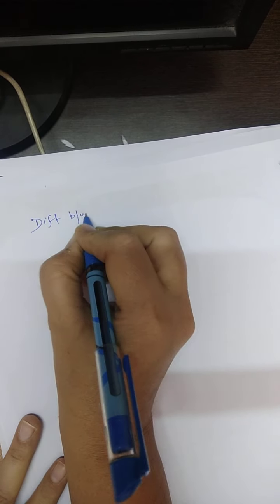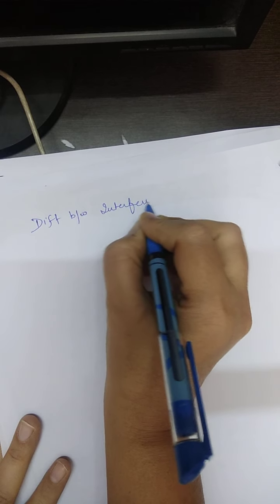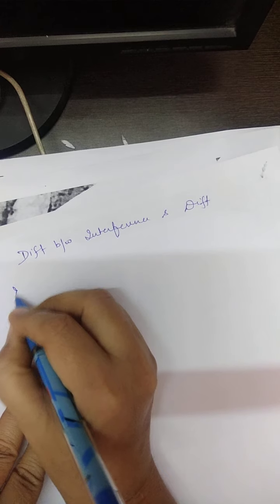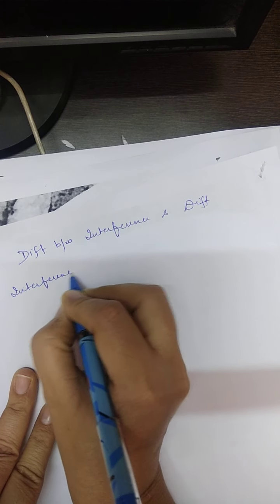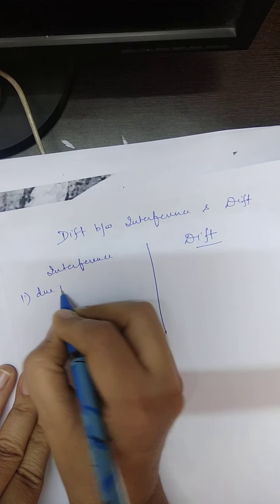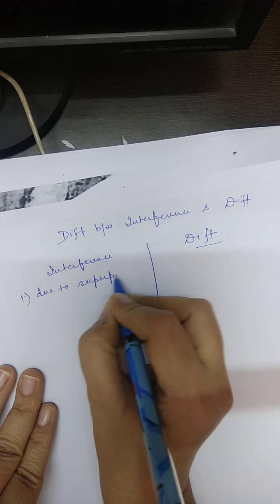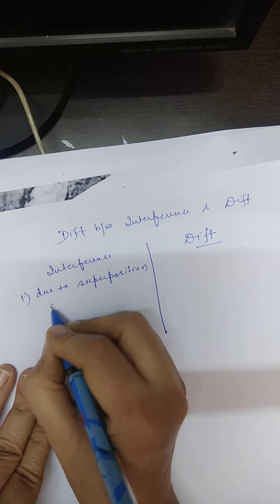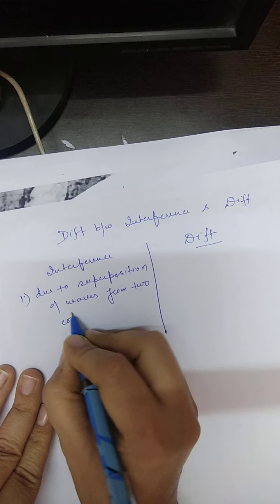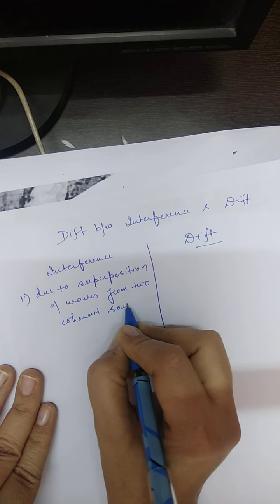Next is the difference between interference and diffraction. First point: interference is formed due to the superposition of waves coming from two coherent sources.